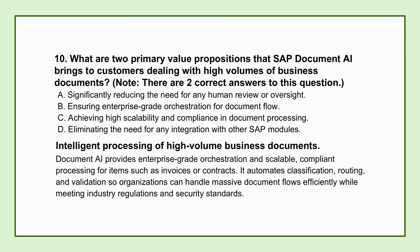Before wrapping up, let's touch on one specific high-volume application area: SAP Document AI, for organizations drowning in invoices, contracts, and shipping documents. Document AI addresses two critical scale issues. First, it provides enterprise-grade orchestration for secure and efficient document flow, ensuring documents are routed correctly and processed reliably — even across different countries with different rules. Second, it achieves high scalability and compliance in document processing, handling massive inbound volumes while automatically meeting legal and regulatory standards for data retention and secure handling.